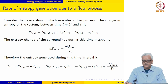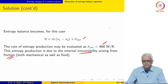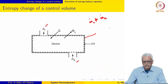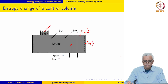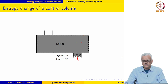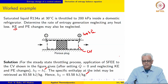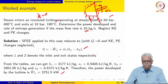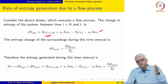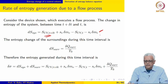We start from the same control volume as before, using the same system. Now the interaction with the surroundings also has to be brought in. For this system, we write the change in entropy of the system between time instants t + Δt and t.